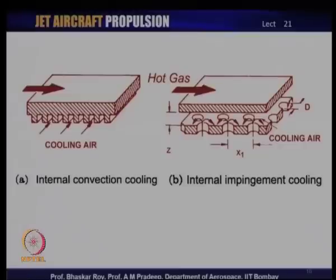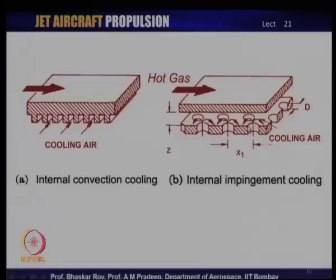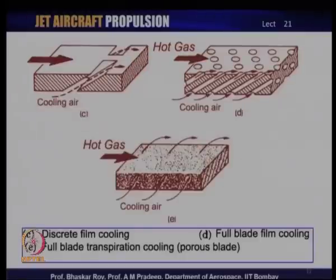The next method, typically used on the internal side of the leading edge of a blade, is impingement cooling. You have the hot plate heated by the hot gas, and then cold air from inside is directed through holes to impinge on the inside of the hot plate. The impingement of cooling air coming through these holes cools the plate from inside. This is called impingement cooling and is deployed in many modern aircraft gas turbines, especially near the leading edges.